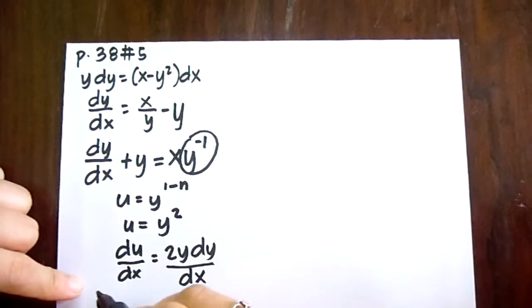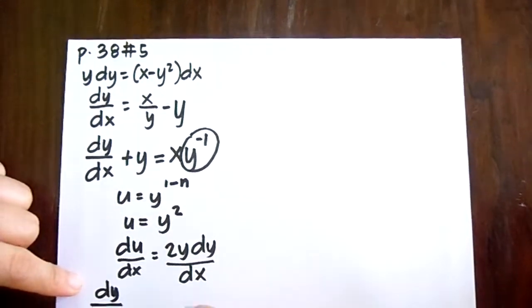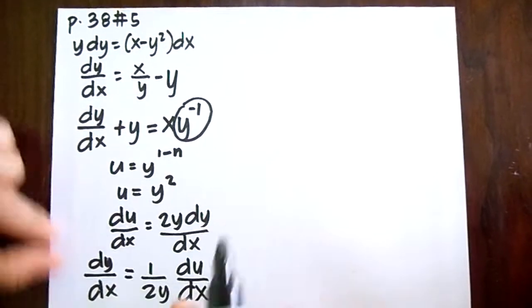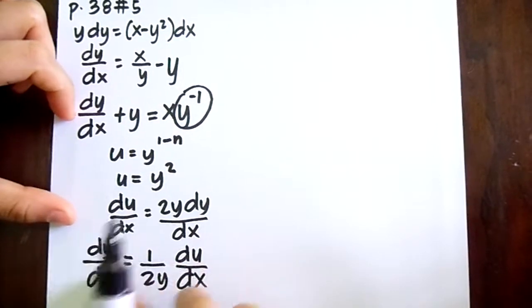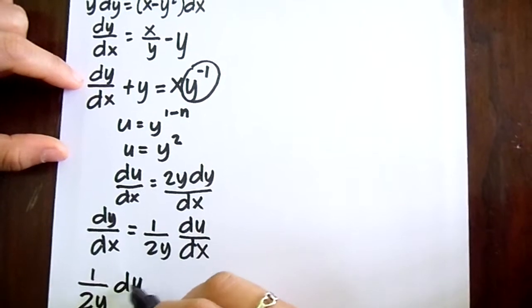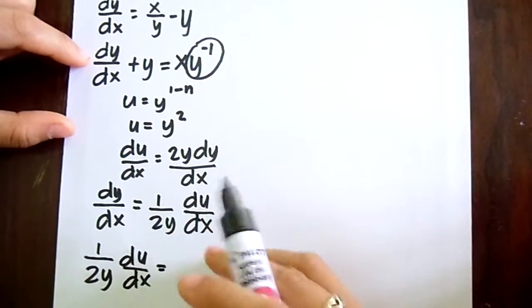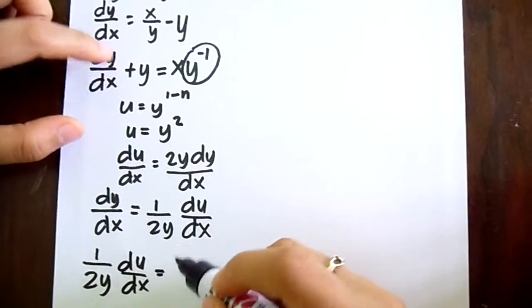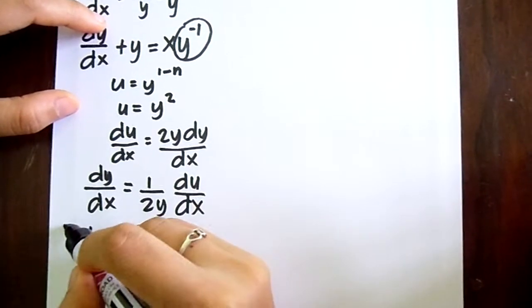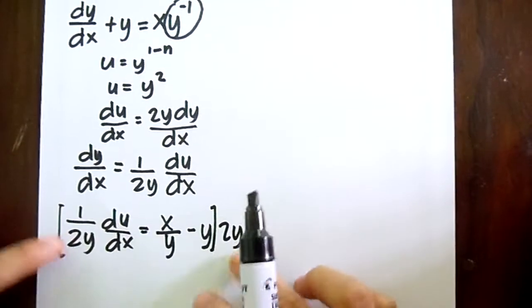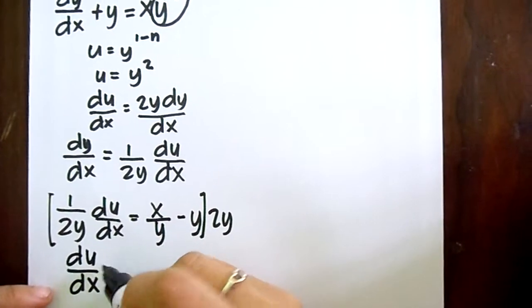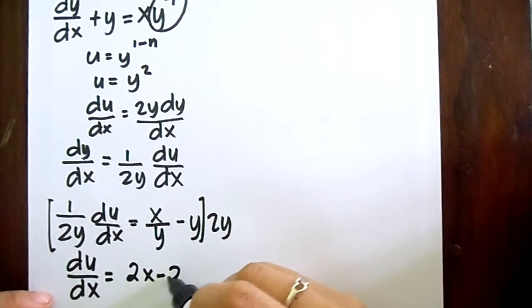From this equation, we're going to get dy over dx, which is equal to 1 over 2y du over dx. Now this result for dy over dx, we're going to substitute it here, so it becomes 1 over 2y du over dx equals x over y minus y.